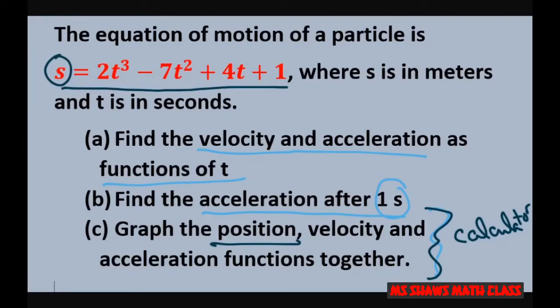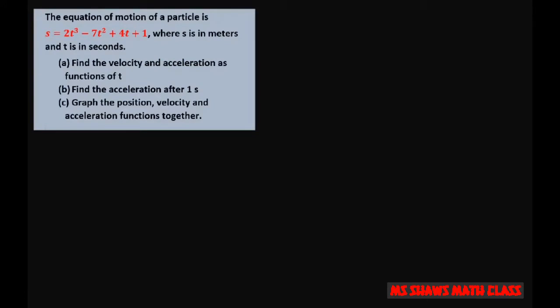So the first thing we're going to do is find, for a, find the velocity. So the velocity of t just equals the derivative of the position of t. So that's going to be 6t squared minus 14t plus 4.